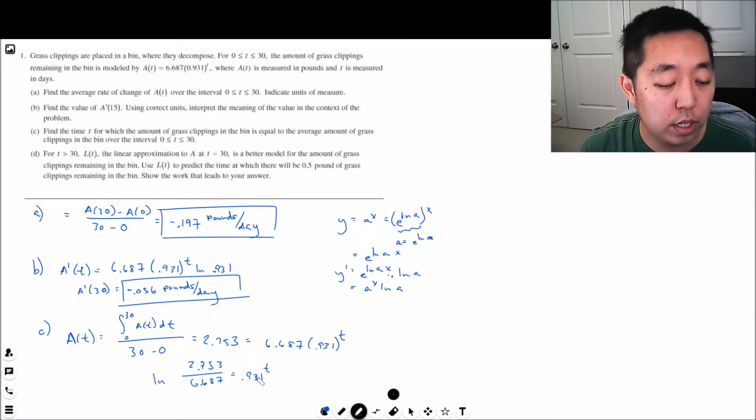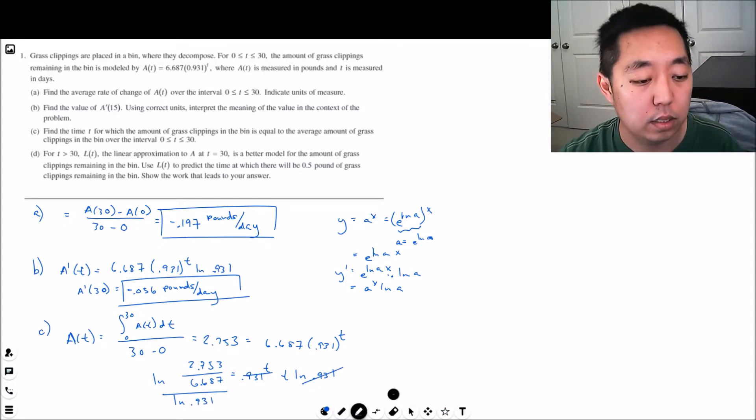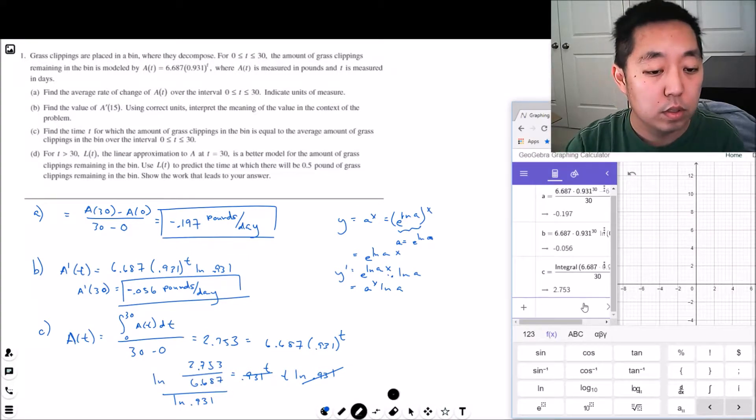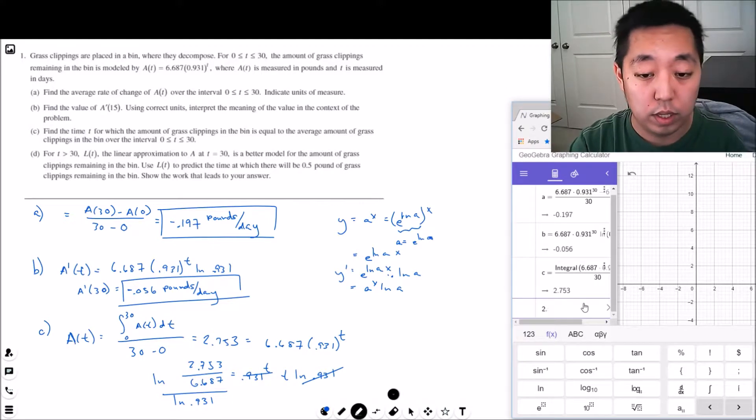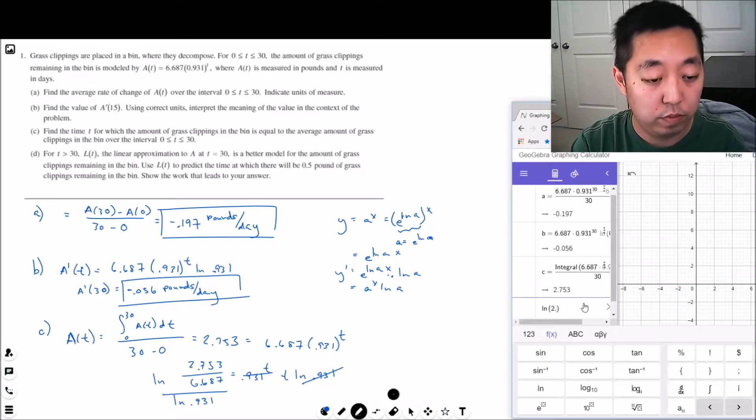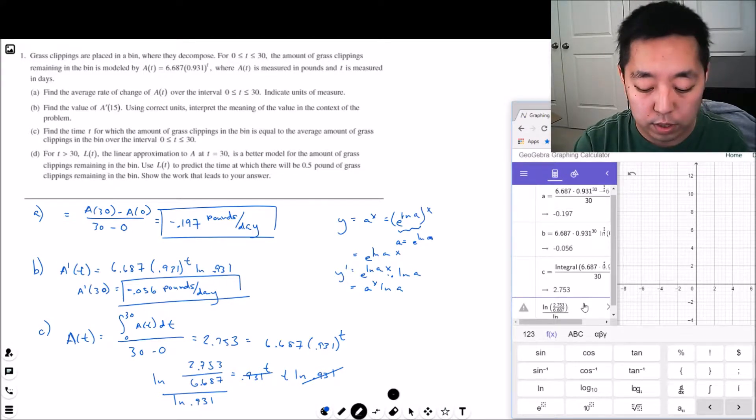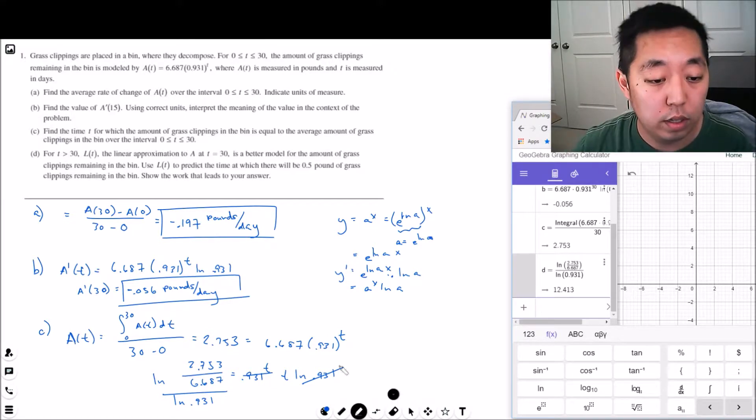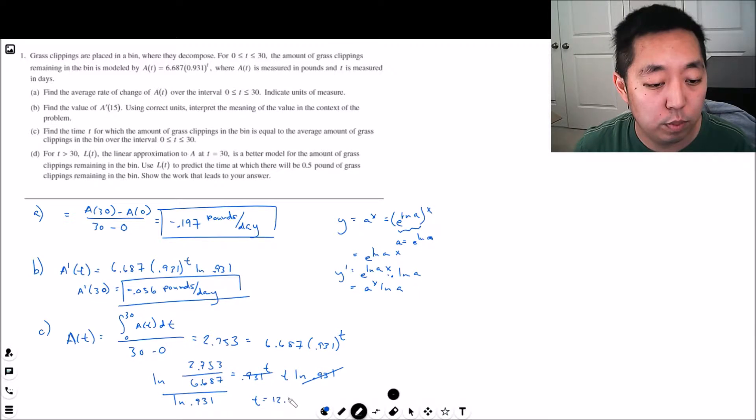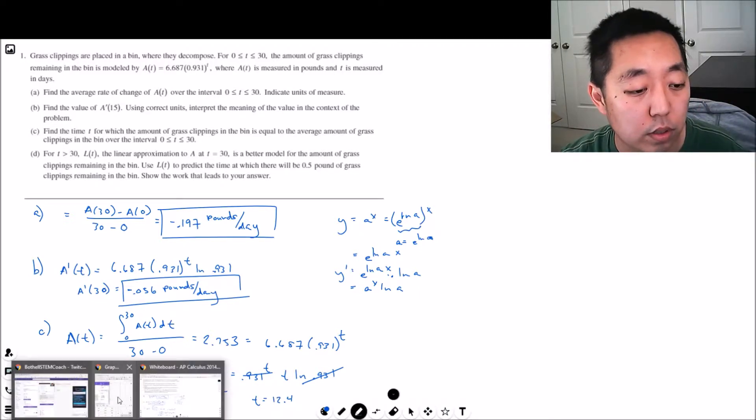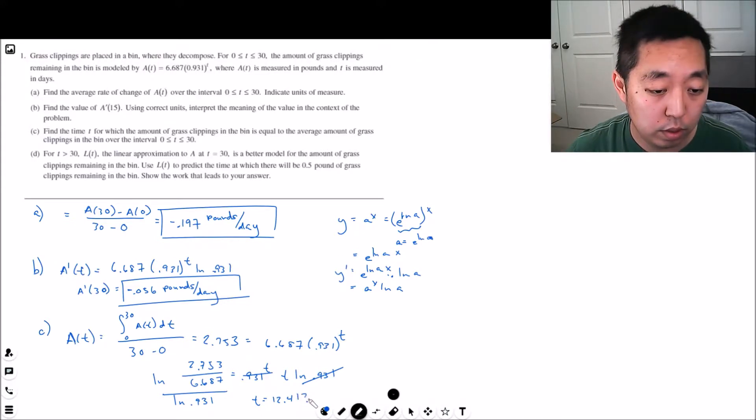Then I take the natural log of both sides, so this becomes t times natural log of 0.931. I'm going to divide by the natural log of 0.931 to get t over there, and that is all I need to do. Natural log of 2.753 divided by 6.687 divided by the natural log of 0.931: 12. So t is equal to 12.413 days.